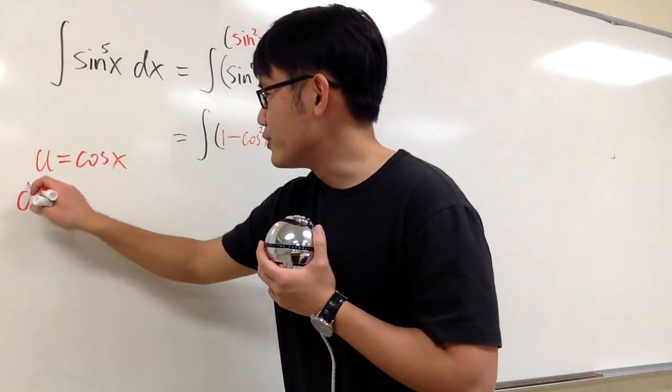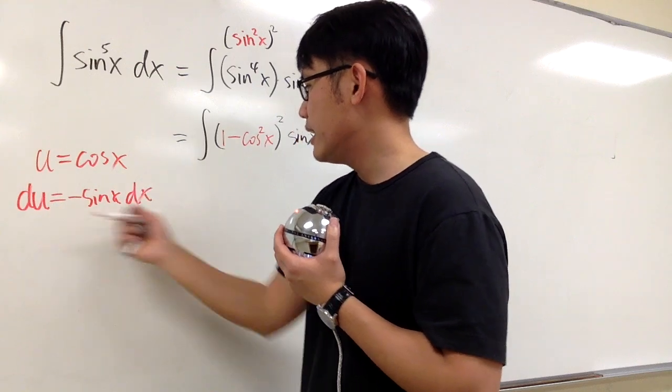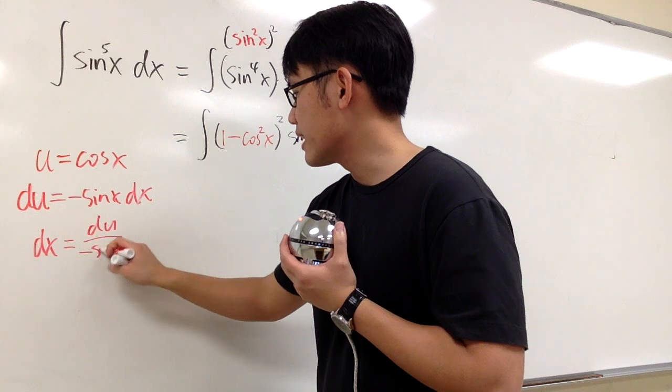Anyways, let's finish this. du will be negative sin x dx. And I need to solve for dx right here. dx equals du over negative sin x.